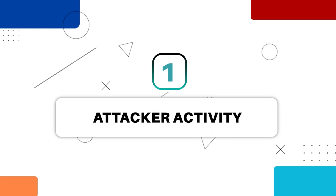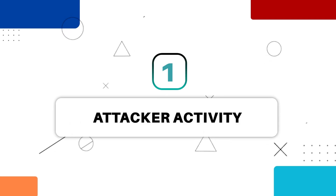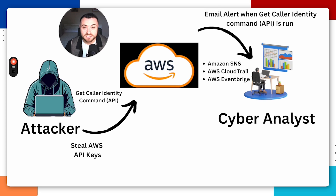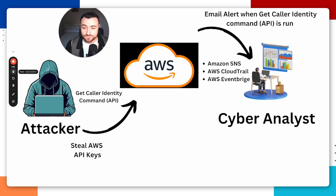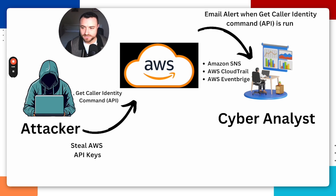If an attacker wants to get access to AWS infrastructure, what they're going to need are some AWS API keys. If they're able to steal AWS API keys, they'll then try to authenticate to that infrastructure. Once they authenticate, they're going to want to figure out more information about those API keys, the user, and the permissions it has, so they can figure out what they can do. One AWS API command they might run is called get caller identity, which displays more information about the user that ran that request.